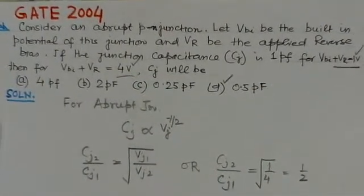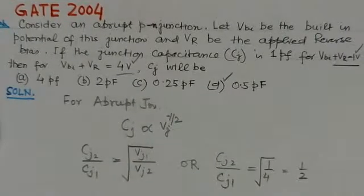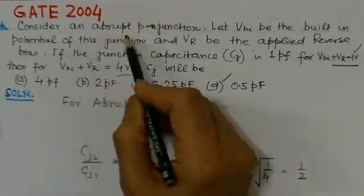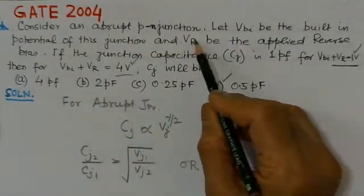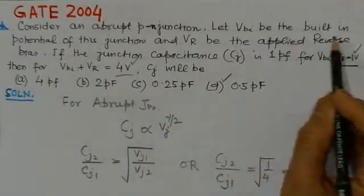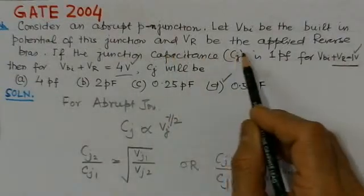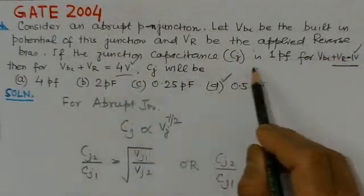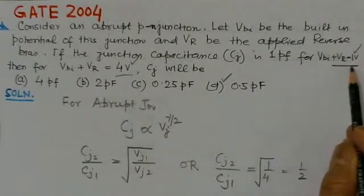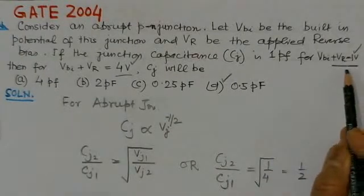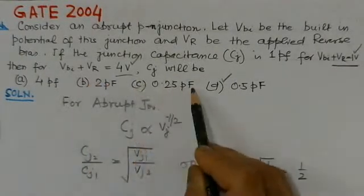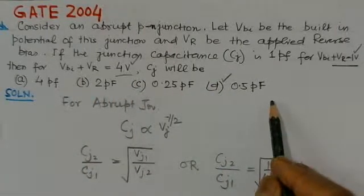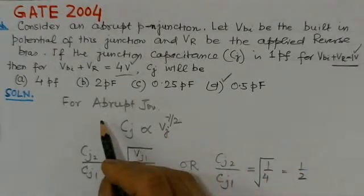Now we look at the problem from GATE 2004. It states: consider an abrupt PN junction. Let V_BI be the built-in potential and V_R be the applied reverse bias. If the junction capacitance C_J is given for V_BI plus V_R equal to 1 volt, find C_J when V_BI plus V_R equals 4 volts. Four options are provided.